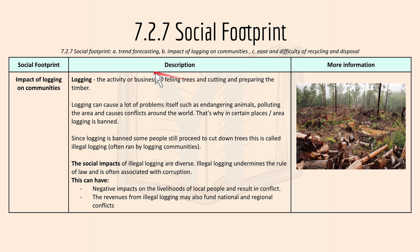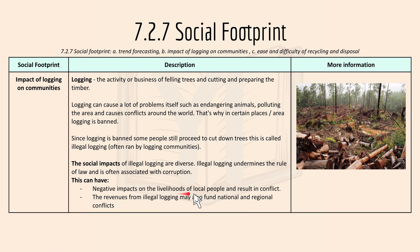The impact of logging on community: logging is the activity of felling trees and cutting and preparing timber. It causes problems such as endangering animals, polluting the area, and causing conflicts around the world, which is why logging is banned in certain areas. When people still proceed to cut down trees despite the ban, this is called illegal logging, often run by logging communities. Illegal logging undermines the rule of law and is often associated with corruption, with negative impacts on the livelihoods of local people, resulting in conflict. Revenue from illegal logging may also fund national and regional conflicts.